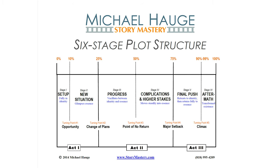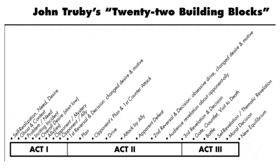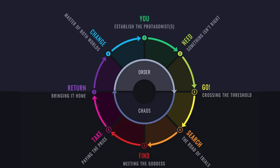Structure has almost become like a dirty word in the screenwriting industry, but your screenplay must have it. Use whatever structure technique works for you — there are many. There's Blake Snyder's Beat Sheet Method, Michael Haig's Six Stages of Plot Structure, John Truby's 22 Step Story Method, and Dan Harmon's Story Circle. Between utilizing one of these four methods, you'll have great story structure. Just pick one.